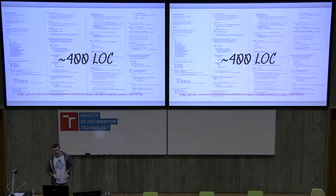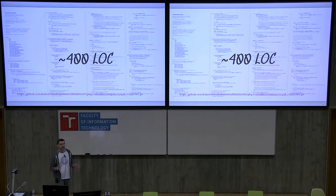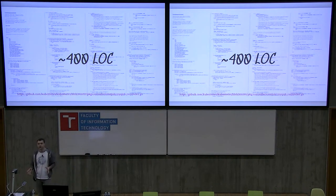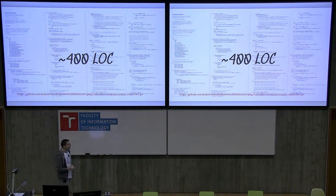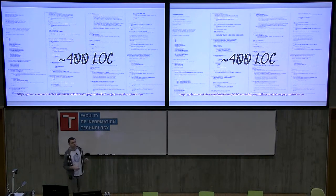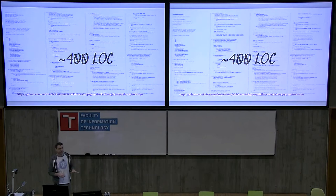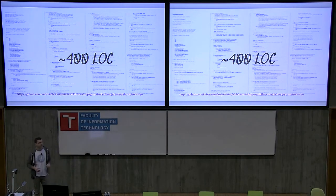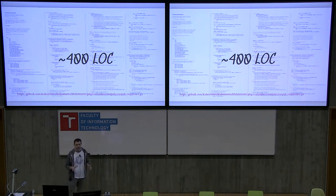Controllers, per se, are not that hard. I'll explain everything in detail so you get a rough idea how to write your own controllers, and most importantly, where to look for the information. What you see on the screen is a real controller that is part of Kubernetes source code — the cron job controller. It's one of the simplest, roughly 400 lines of code.